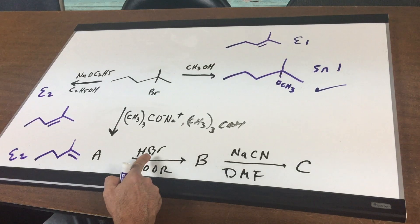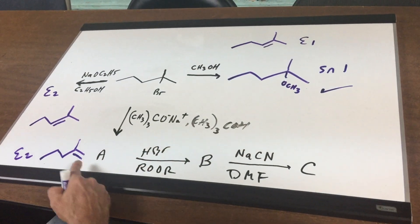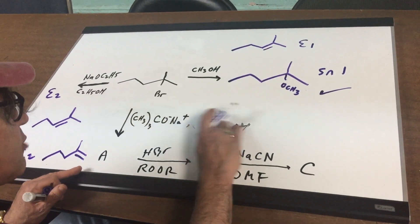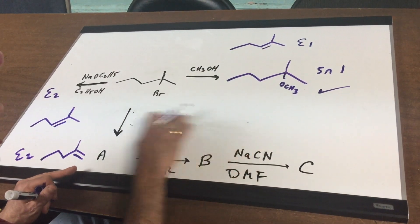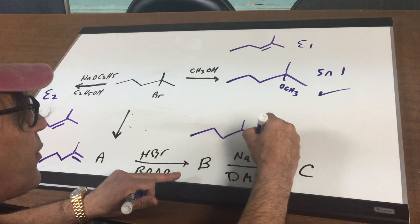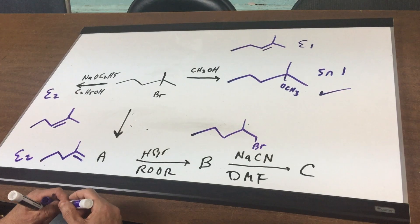And then I ask you to treat this with HBr and peroxide. What that's going to do is put a bromine on the very end. So let me just erase this, just to make some room. So B would be this right here, where the bromine would be on the very end.